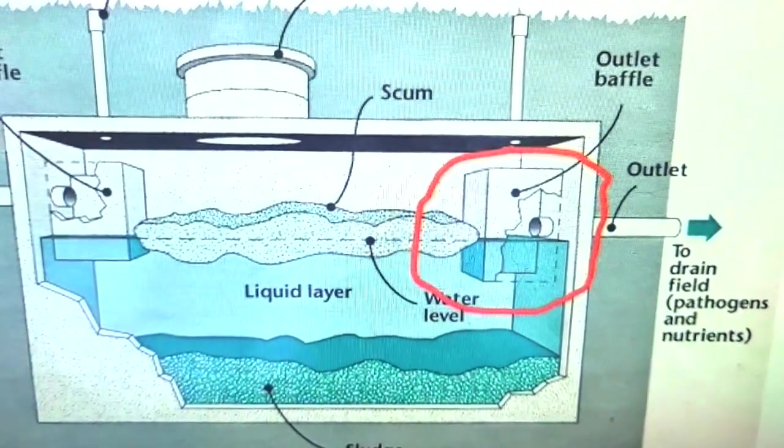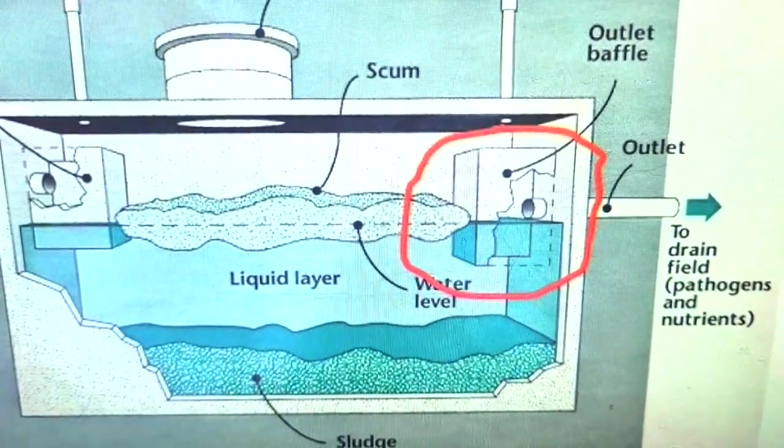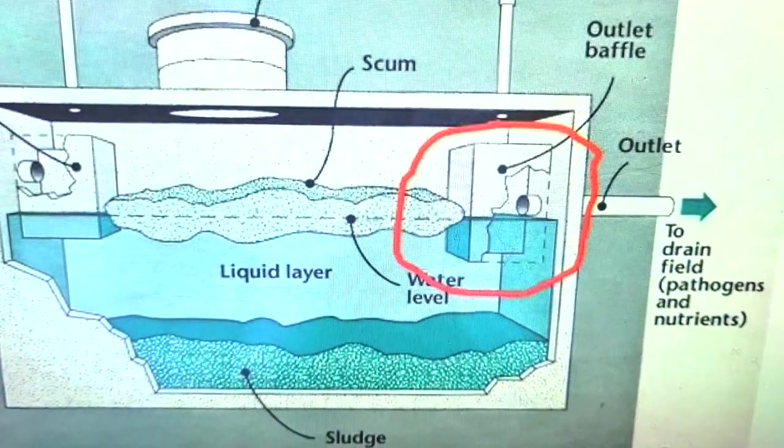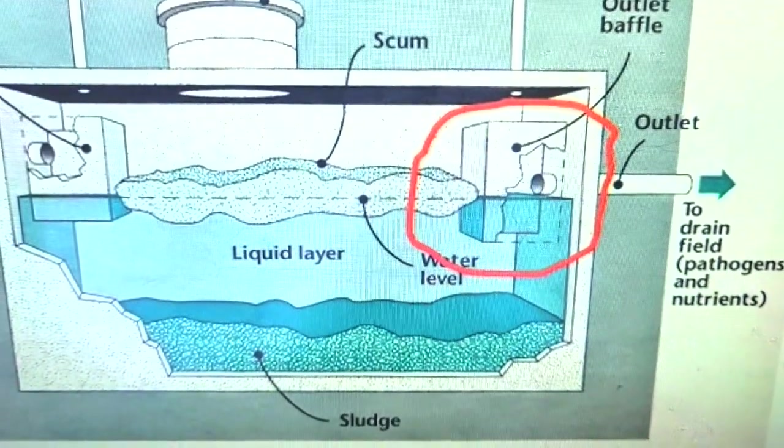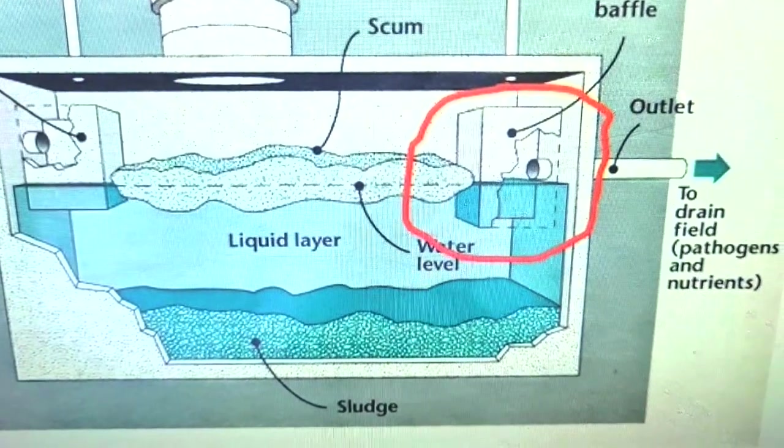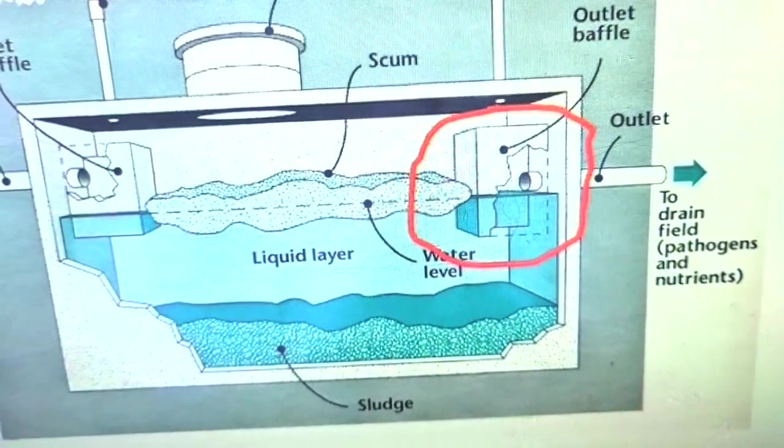In our particular tank, when we opened it, we discovered that that outlet baffle, that cement baffle box on the inside, was broken, badly broken, corroded all the way. So it wasn't doing its job. There was probably some scum that was getting through and into the pipe and that'll plug up the septic bed. It's not good at all. What did we do?